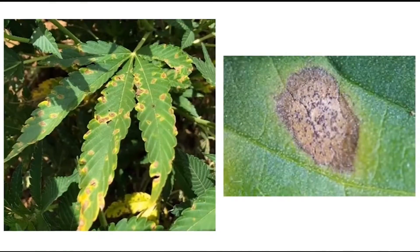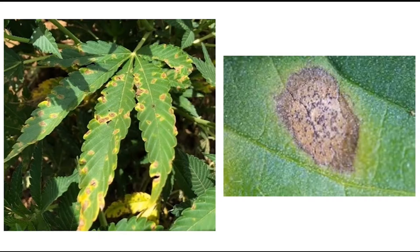To your left you'll see septoria leaf spot. One of the major symptoms you can use to help diagnose this disease is a prominent yellow halo that surrounds these spots. When we think about leaf spots of hemp, there are really three main players in Kentucky: septoria leaf spot, which we're talking about here;